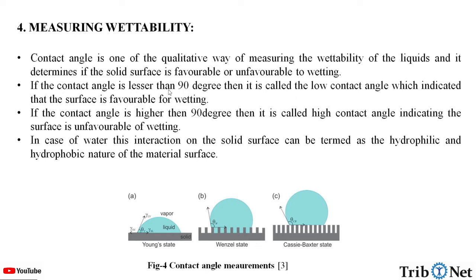If the contact angle is less than 90 degrees, it is called a low contact angle, which indicates that the surface is favorable for wetting. If the contact angle is higher than 90 degrees, it is called a high contact angle, indicating the surface is unfavorable for wetting. In the case of water, this interaction on the solid surface can be termed as the hydrophilic and hydrophobic nature of the material surface. Here in this figure, we can see the different contact angle measurements for wettability.